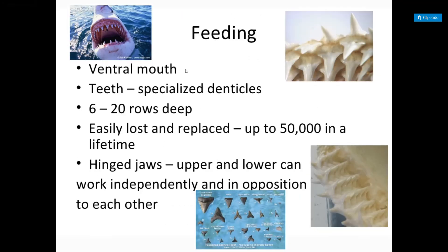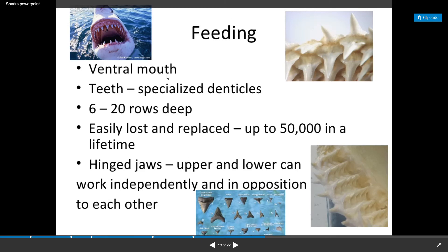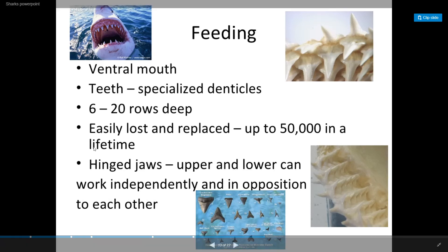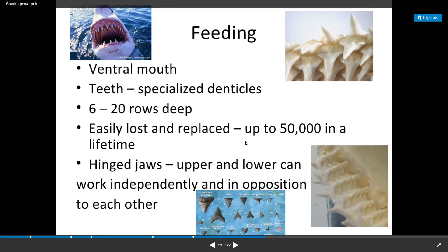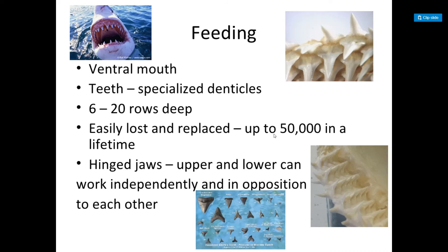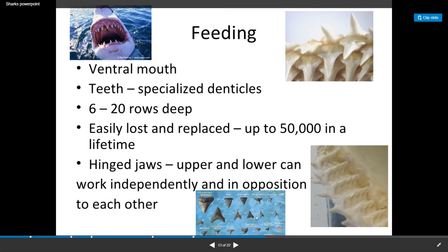Feeding: they have a ventral mouth and their teeth are specialized denticles. They have six to twenty rows of teeth, easily lost and replaced, so they can have up to 50,000 teeth in a lifetime. They have hinged jaws where the upper and lower jaw work independently and in opposition to each other, and different species have different tooth shapes.